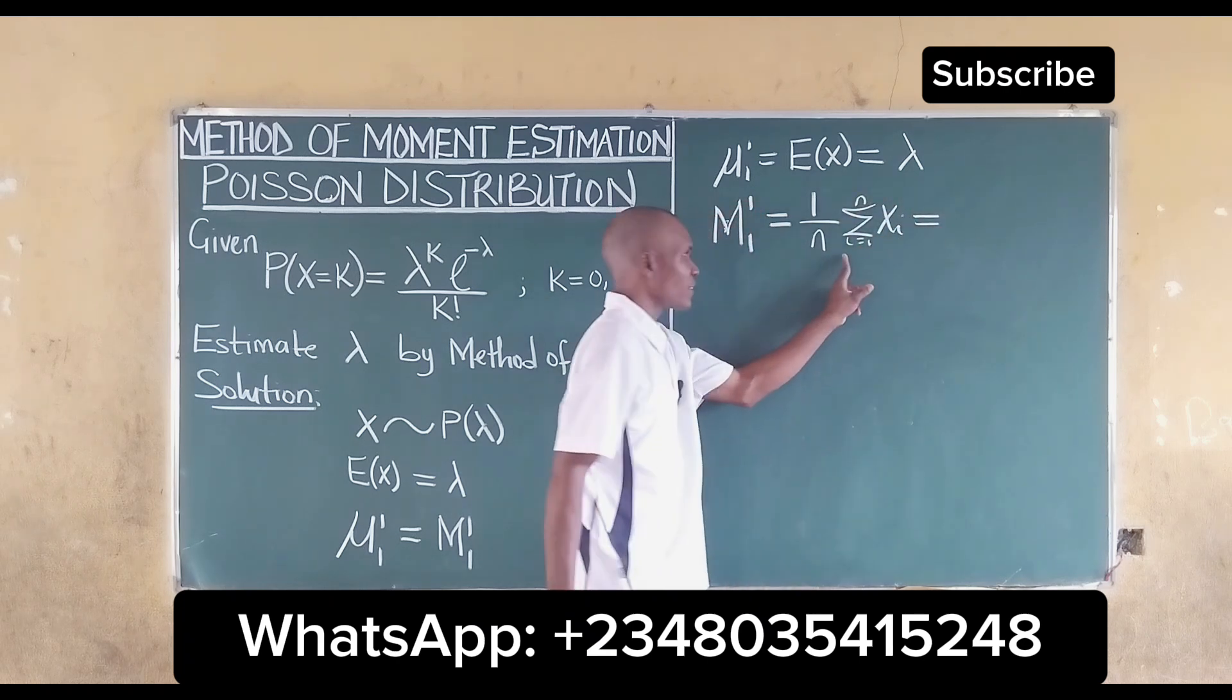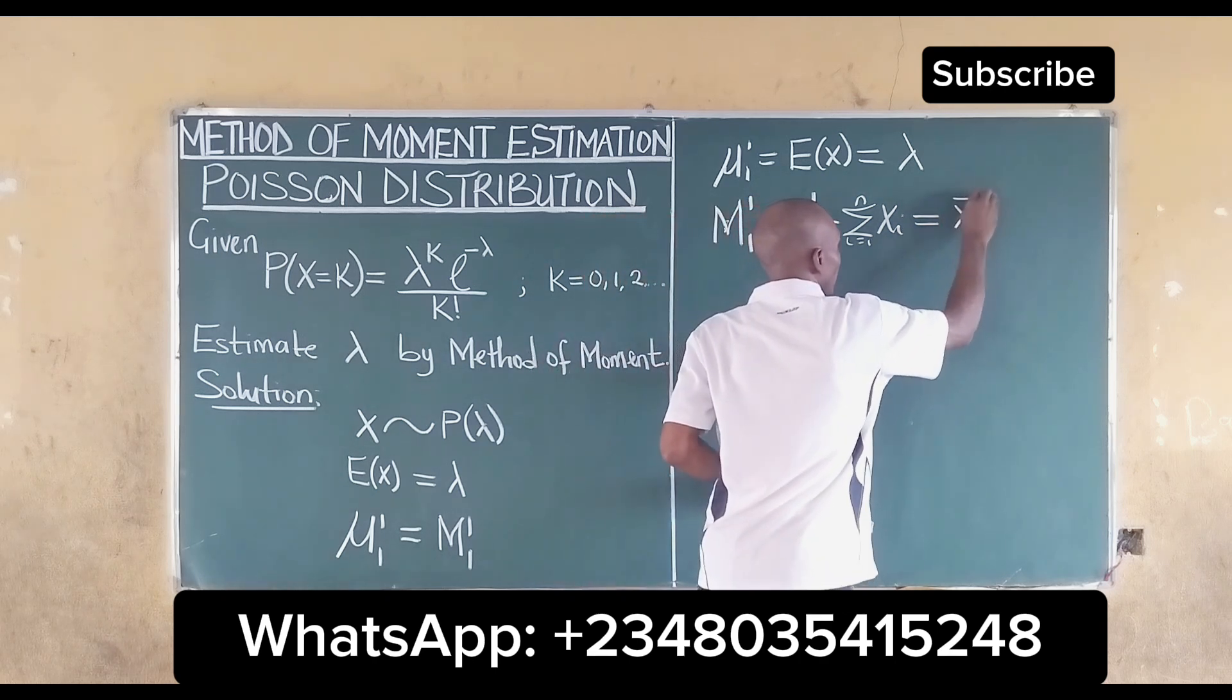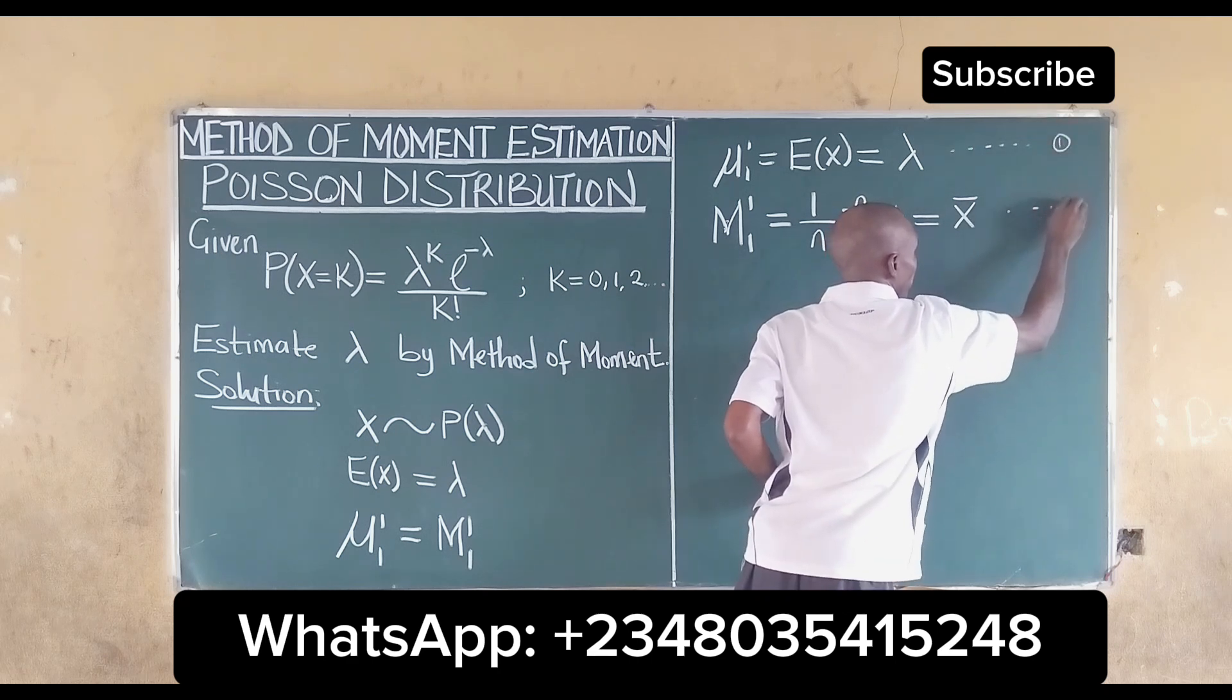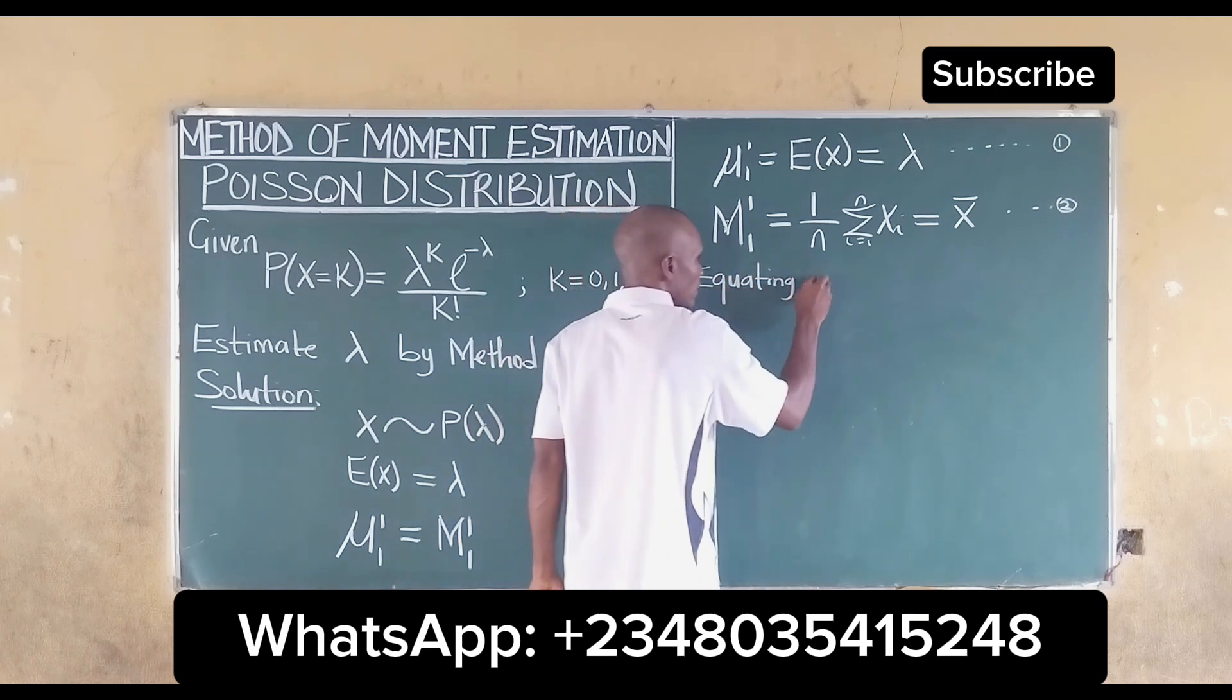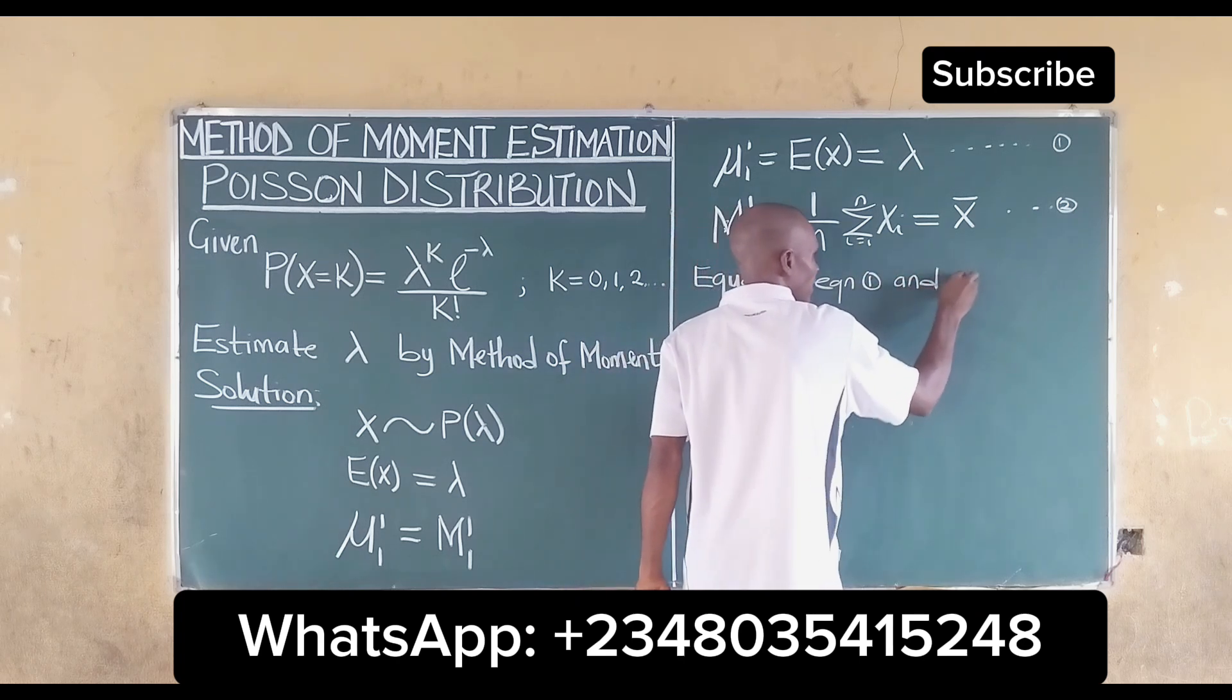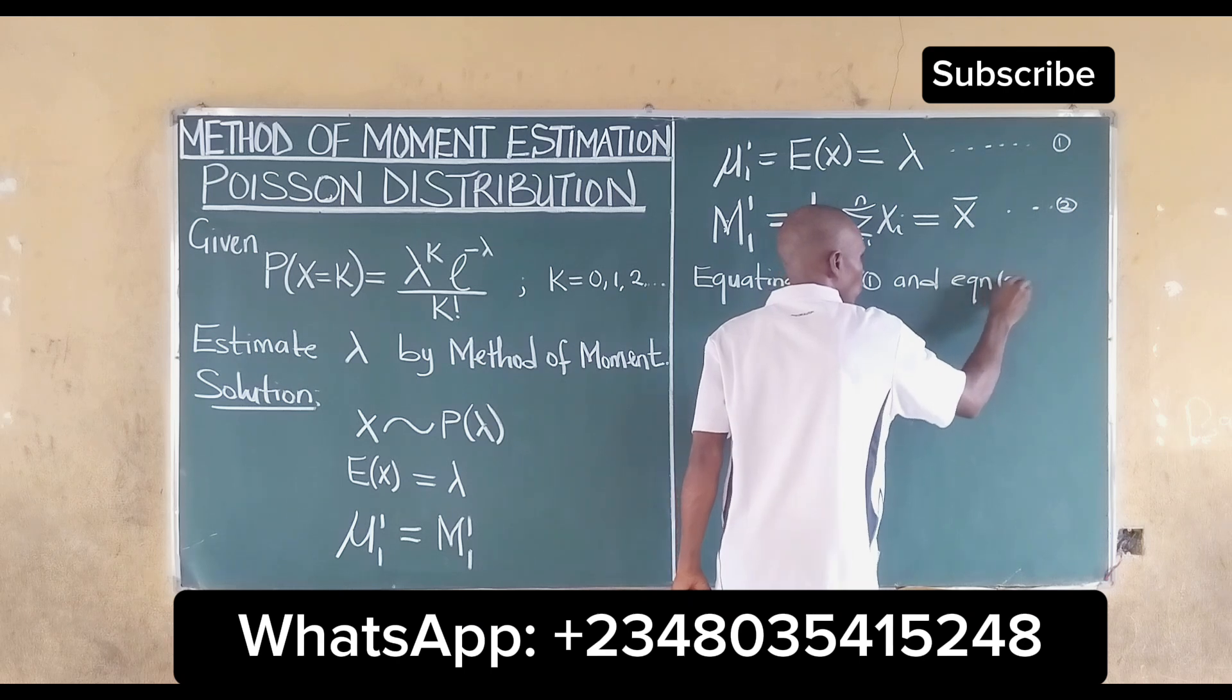We know that this is equal to the mean. So we make this equation 1 and this equation 2, then we equate equation 1 and equation 2.